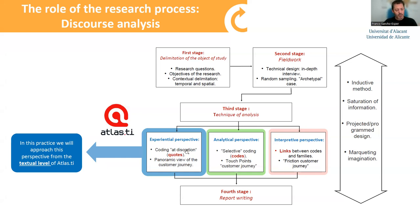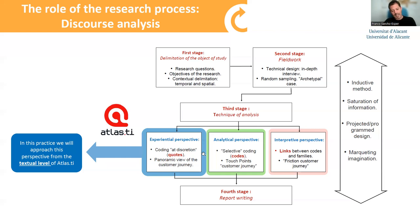In the first case — the experiential perspective — what we are going to do is quote at discretion, using the different quotes as much as possible. That means every sentence or idea you think could be related to any of your objectives is going to be underlined. We are also going to use memos and see how to write different types of notes. In the next class, we are going to do selective coding, using codes and going through all the different quotes or citations, assigning and categorizing each of the ideas into different concepts.